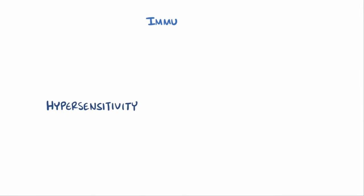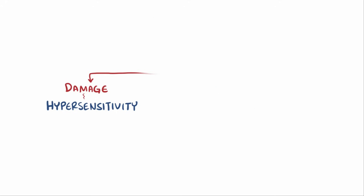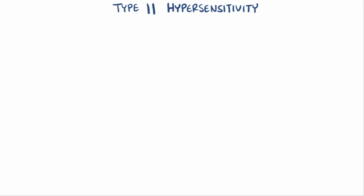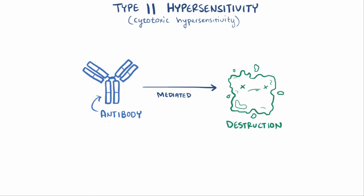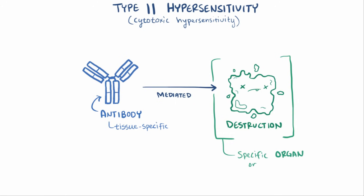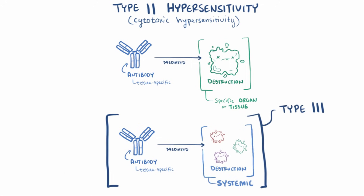Having a hypersensitivity means that the immune system is reacting to something in a way that damages the body rather than protecting it. There are four different types of hypersensitivities, and type 2 hypersensitivity is sometimes called cytotoxic hypersensitivity because disorders caused by it involve antibody-mediated destruction of healthy cells. These disorders tend to be tissue-specific, meaning the antibodies are generally specific to one type of tissue or organ. Other antibody-mediated hypersensitivities that are systemic are generally type 3 hypersensitivities.